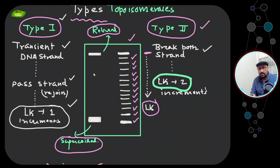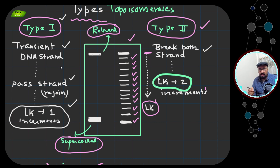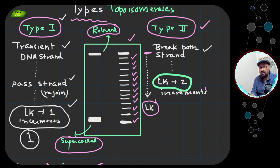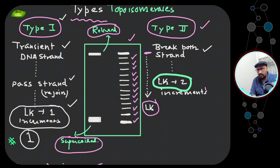There are two basic types of topoisomerases: Type 1 and Type 2. Type 1 topoisomerase causes a break in one DNA strand, passes another strand through, then rejoins it. This changes the linking number by an increment of one. Energy is required for Type 1, but not in the form of ATP — it uses energy from the phosphodiester bond.